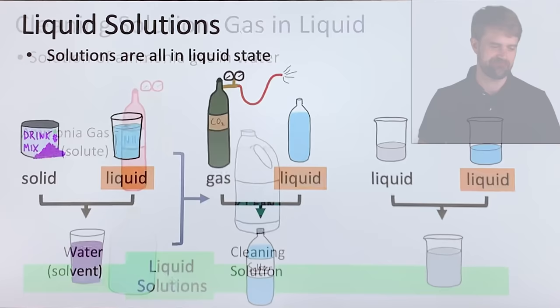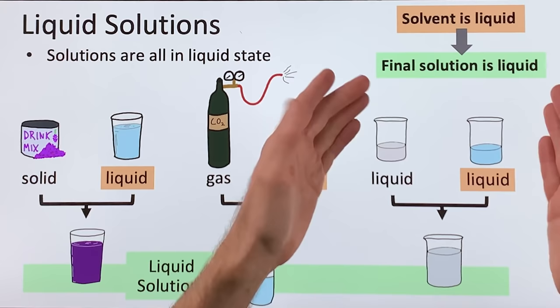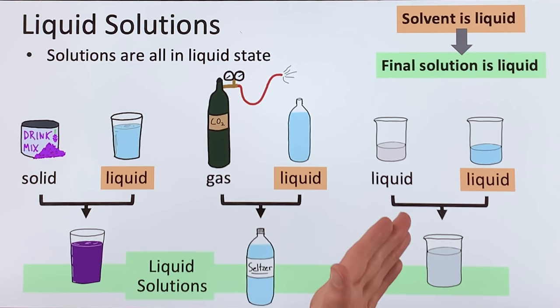Now, if you think about all the solutions that we've looked at so far, you might notice that they're all in the liquid state. They're all liquids, and we call these liquid solutions. If your solvent is a liquid, your final solution will be in the liquid state no matter what the solute is. So, the solute can be solid, it can be gas, it can be liquid. If the solvent is liquid, the final solution will also be liquid.